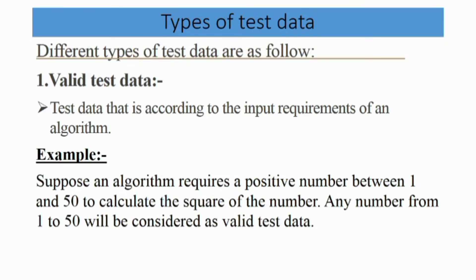Now we will discuss types of test data. It is important to create proper and efficient test data to improve the quality of the solution. Each type of solution may require different types of test data. The first type is valid test data — a type of test data that is according to the input requirements of an algorithm. For example, if an algorithm requires a positive number between 1 and 50 to calculate the square of the number, any number from 1 to 50 will be considered valid test data.